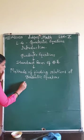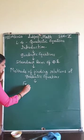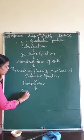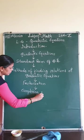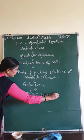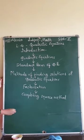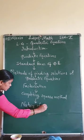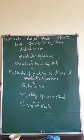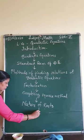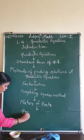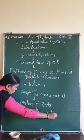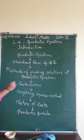Then you are going to learn about various methods of finding solutions of quadratic equations. The first method is the factorization method. The next method is the completing the square method. After that you are going to learn about the nature of roots. What are roots — first of all you should know — and then after nature of roots you are going to learn about the quadratic formula.